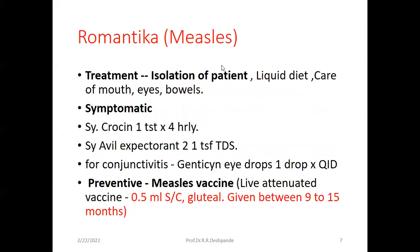The treatment of measles: first, as it is contagious, you must isolate the patient. Give a liquid diet which is easy to digest. Take care of the mouth, eyes, and bowels — the bowels should be regular and soft. Since this is a viral infection, give symptomatic treatment: Syrup Paracetamol (Proxene) — one teaspoon every four hours — to control the fever.